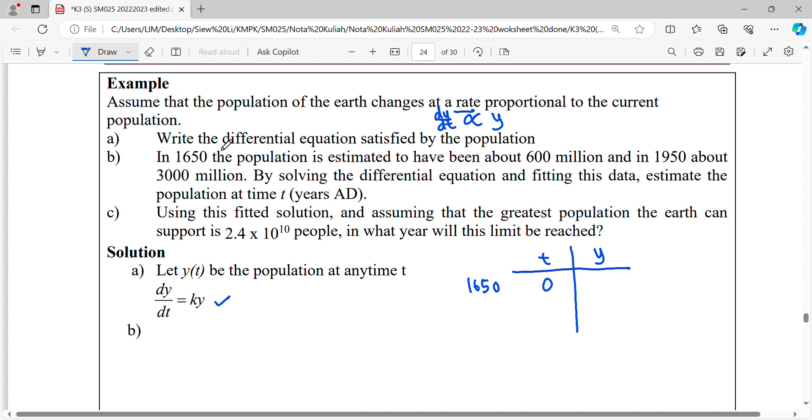The population is estimated to have been about 600 million. So the population here, in the unit of million, we put 600.